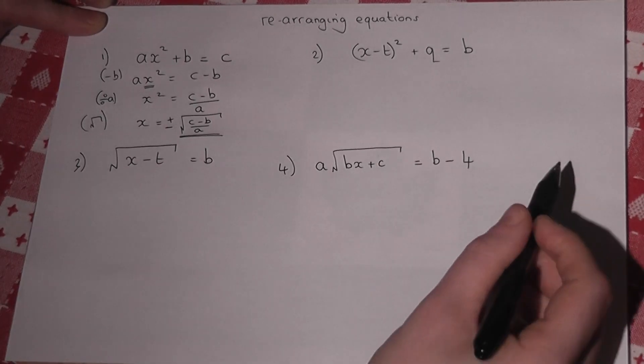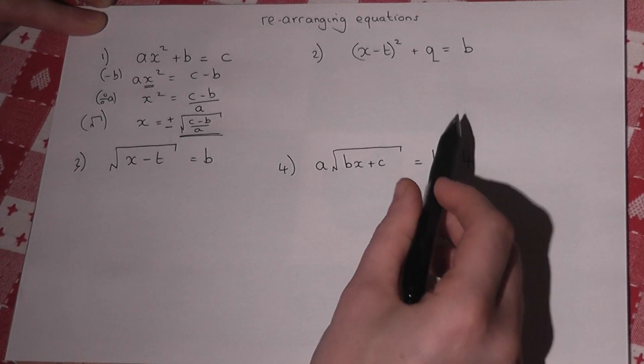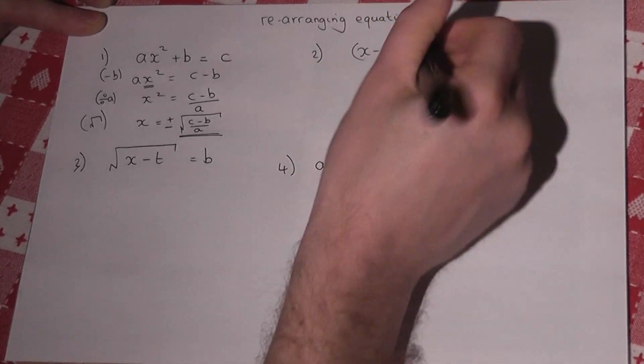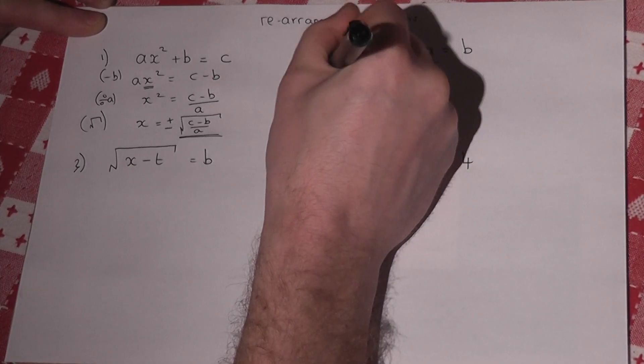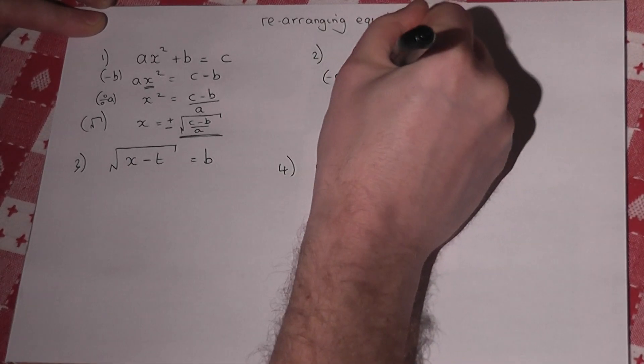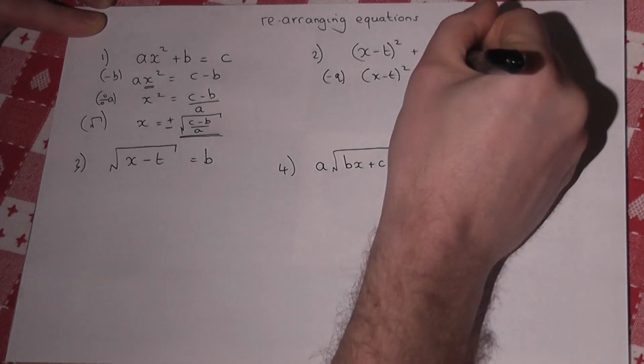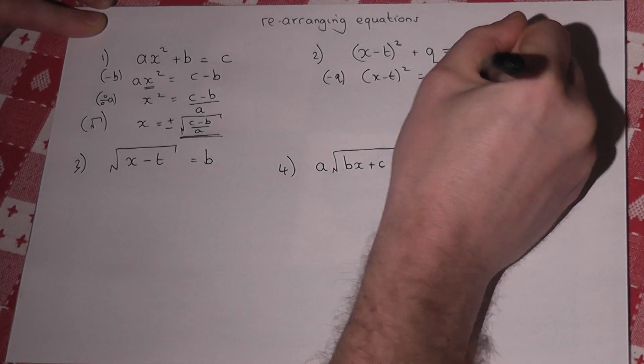So the second one, again, it's the usual steps. There's a plus q here, so I begin by taking q away. So I get x minus t squared equals b, take away q.